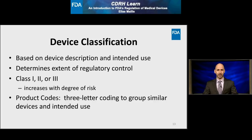FDA classifies devices — or more accurately, device types — in order to identify the degree of regulation for that product area. Classification is largely based on two factors: the device description, that is, its physical characteristics, and the intended use. FDA classifies devices into Class 1, 2, or 3; the class of a device generally increases with its degree of risk. In addition, each device type is assigned a product code, a three-letter coding that allows FDA to group similar devices and intended uses. Note that the same device with a different intended use may have a different classification, product code, and class.